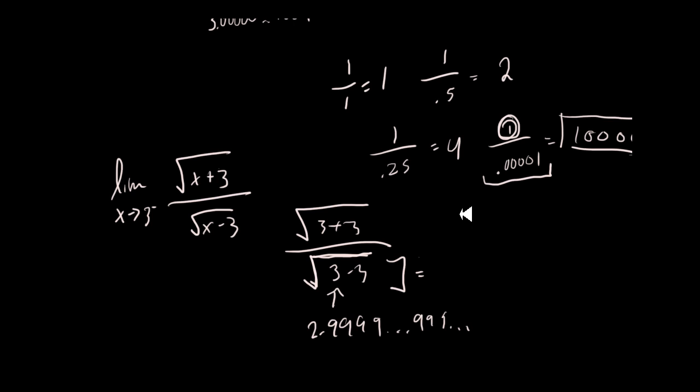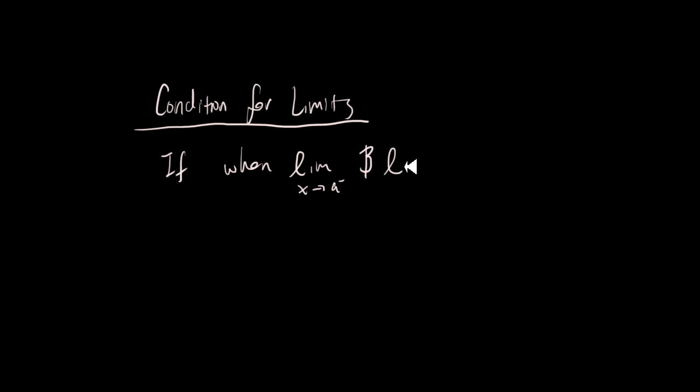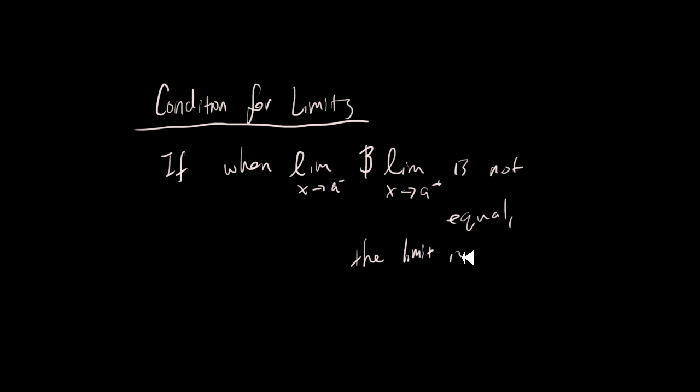That's the basic idea of when a limit approaches a number from different sides. This is actually a condition for whether a limit exists or not. The condition is: if the limit as X approaches a from the positive side does not equal the limit from the negative side, then the limit is not defined — it doesn't exist.